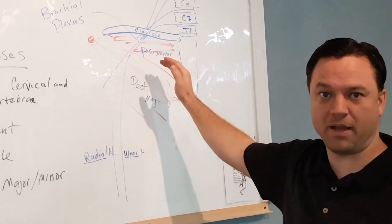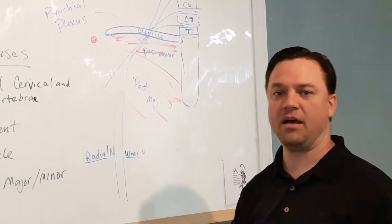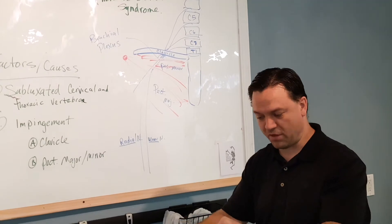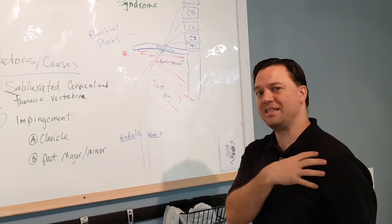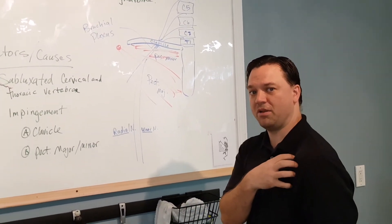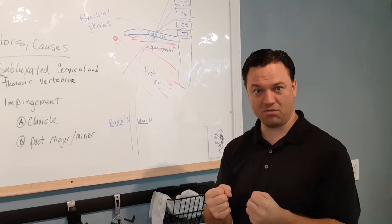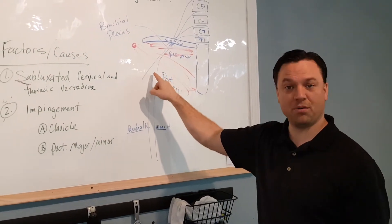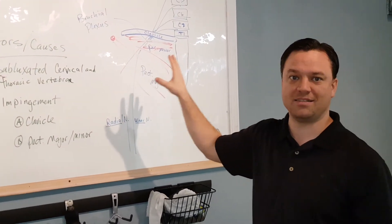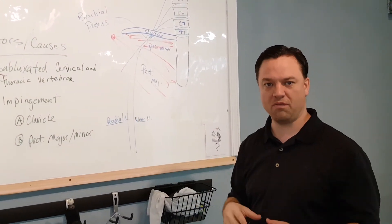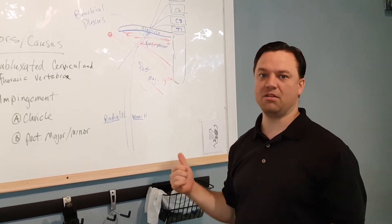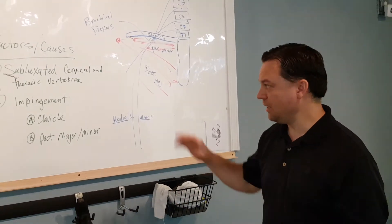These can also get pinched from the pectoralis minor and pectoralis major. Unfortunately, we do live in a digital age where we type too much or we're doing too much forward-facing work. These guys in the front become encroached and really tight, and as a result, that actually causes compression right there and pushes on the brachial plexus itself. So that's one of the two major mechanisms behind thoracic outlet syndrome.